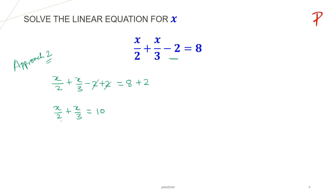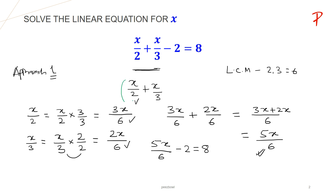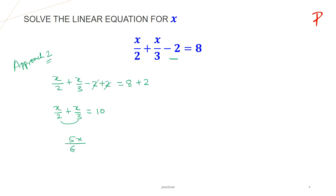Now this is very simple. We have to take the LCM of 2 and 3, which is 6. At the numerator's place, we found that this is nothing but 5x. We have seen this in the earlier slide, so x upon 2 plus x upon 3 equals 5x upon 6. So 5x upon 6 is equal to 10. Now we are going to multiply both sides by 6 to remove 6 from the denominator, giving us 5x is equal to 10 multiplied by 6, which is 60.